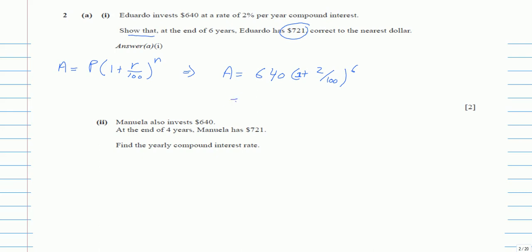Now when you solve this in the calculator, you will get 720.74 and so on. You have to show at least to one decimal place to round it to the nearest dollar. So now we are going to round to the nearest dollar, which will be 721. Hence proved.